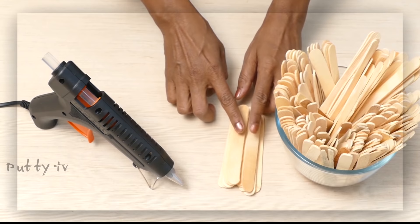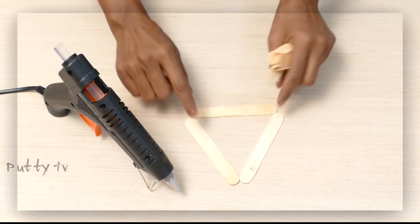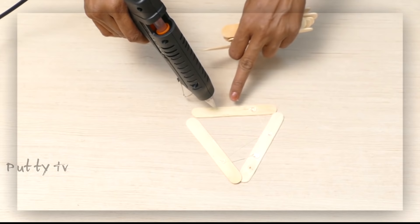Now we are going to make a star shape first. Apply the glue. It should be like a star shape.